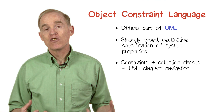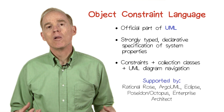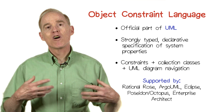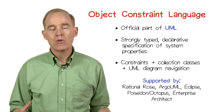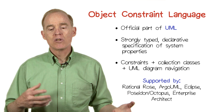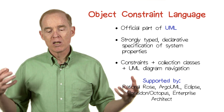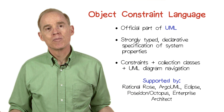OCL is a mature technology. It is an official part of UML and is supported by various tools such as Rational Rose, Argo UML, Eclipse, Poseidon, Enterprise Architect, and so on.